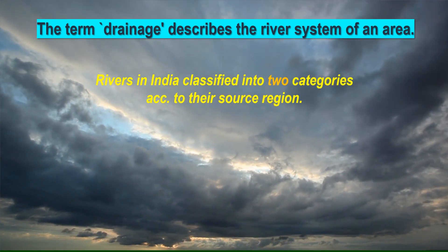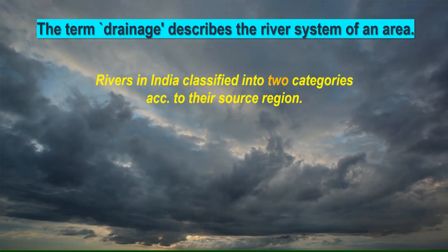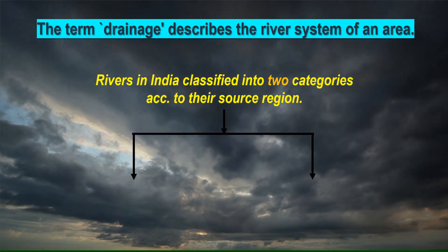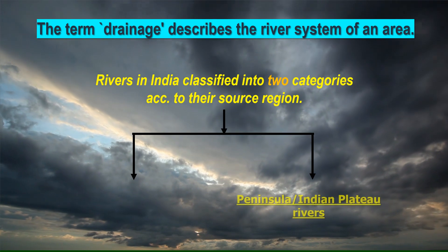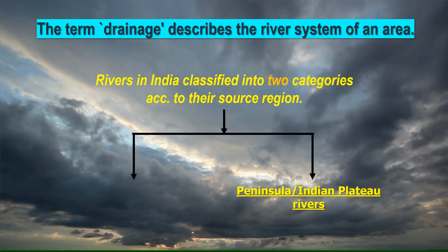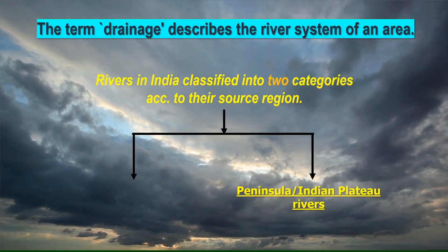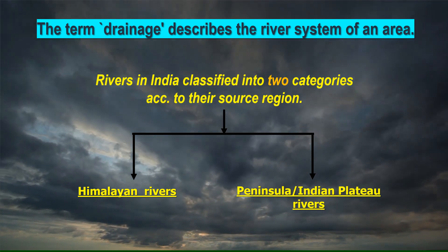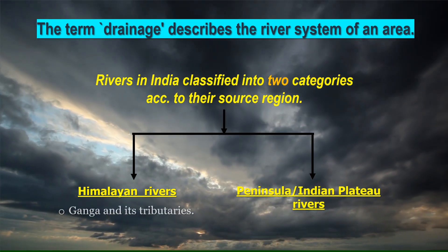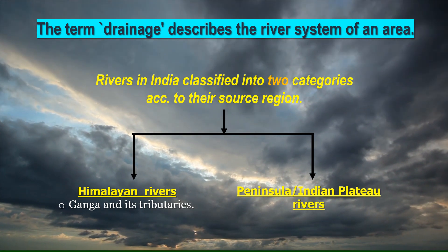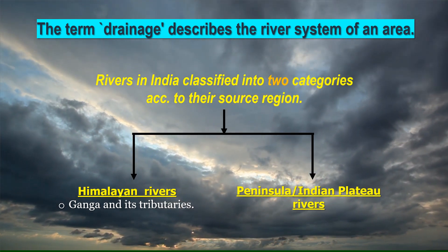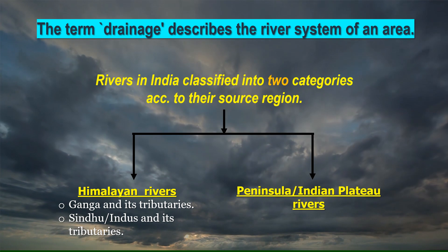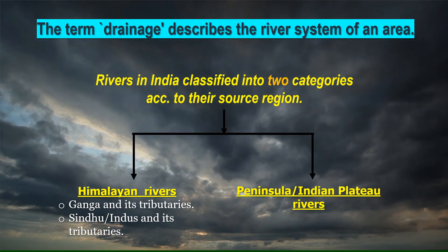That means where the river begins its journey. The two categories are the Peninsular or the Indian Plateau rivers and the Himalayan rivers, also called the North Indian rivers. The Himalayan rivers are further categorized into Ganga and its tributaries, and Sindhu or the Indus river and its tributaries.